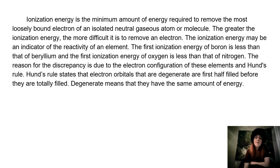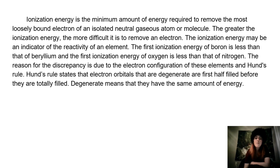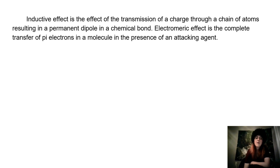Ionization energy is the minimum amount of energy required to remove the most loosely bound electron of an isolated neutral gaseous atom or molecule. The greater the ionization energy, the more difficult it is to remove an electron. The first ionization energy of boron is less than that of beryllium, and the first ionization of oxygen is less than that of nitrogen. The reason for the discrepancy is due to the electron configuration of these elements and Hund's rule. Hund's rule states that electron orbitals that are degenerate are first half-filled before they are totally filled. Degenerate means that they have the same amount of energy.